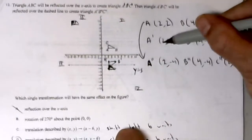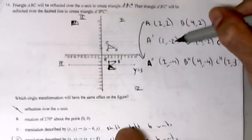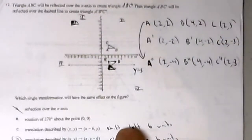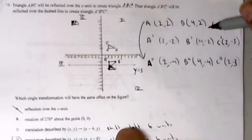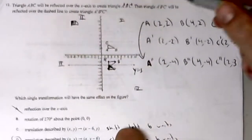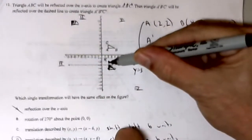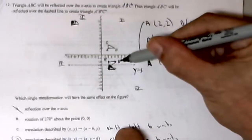So A' will be (2, negative 2), B' will be (4, negative 2), and C' will be (2, negative 3). That brings me down here.